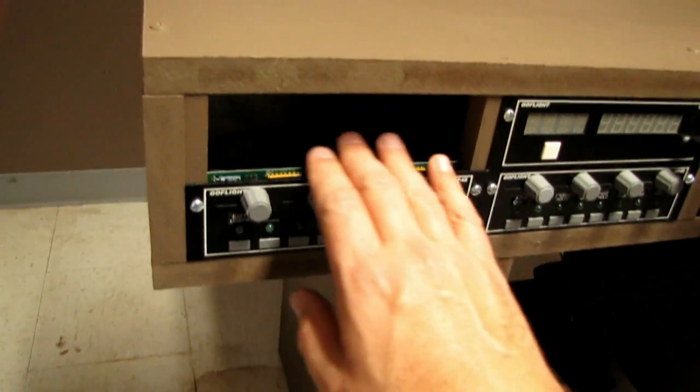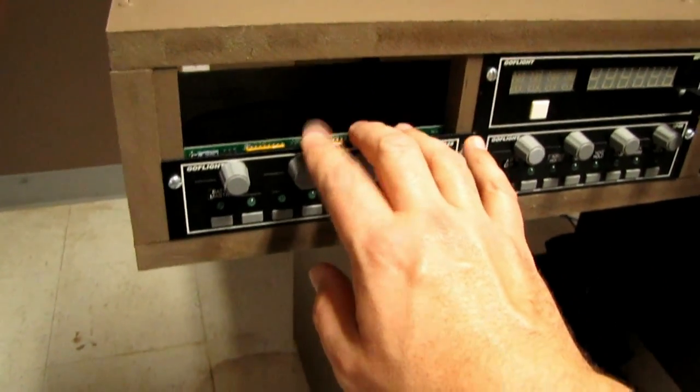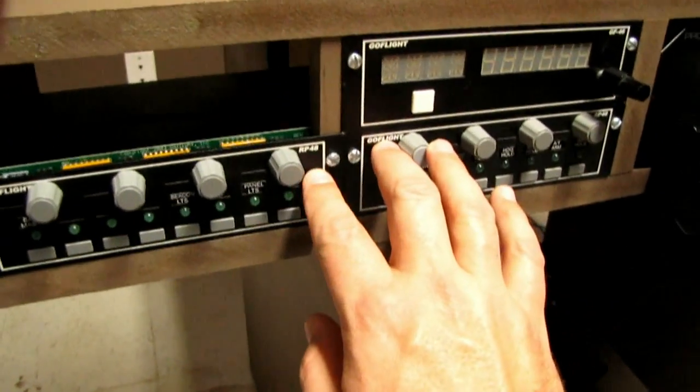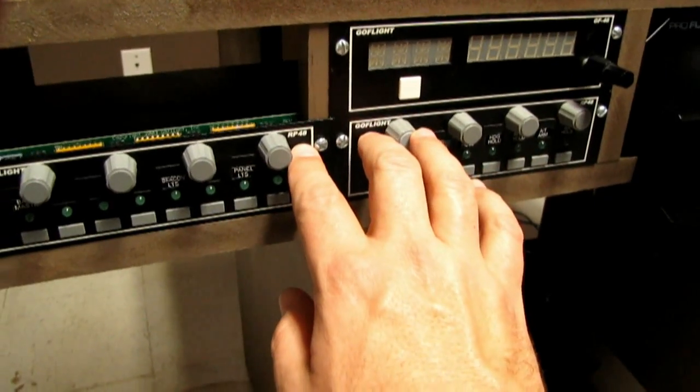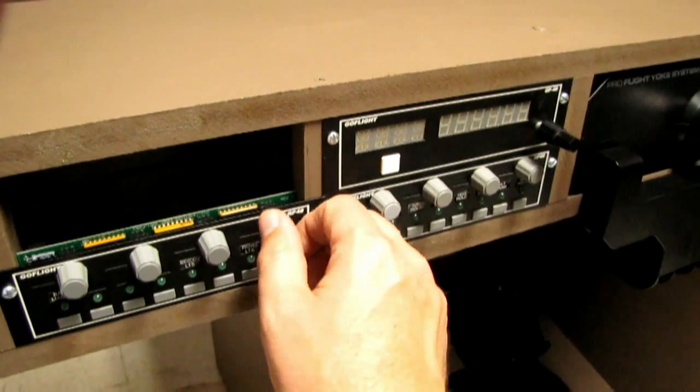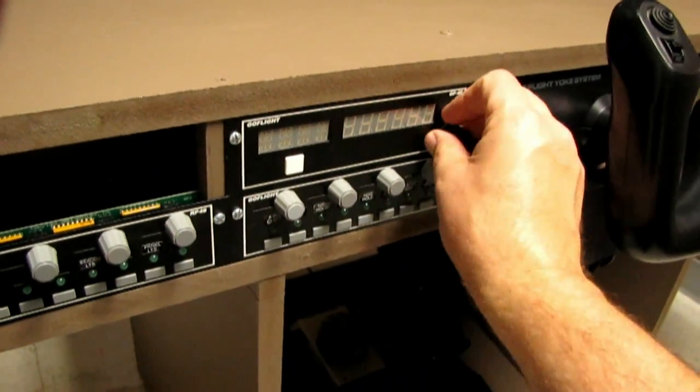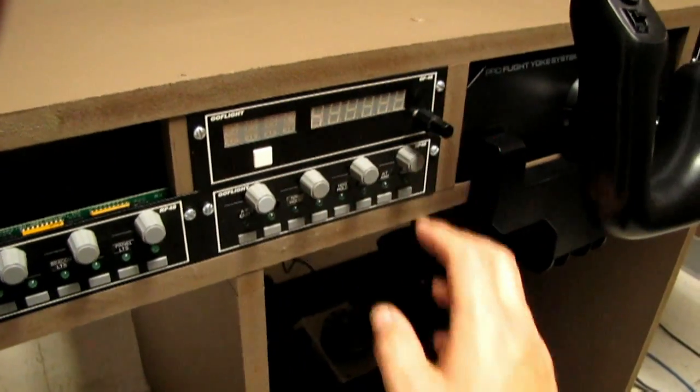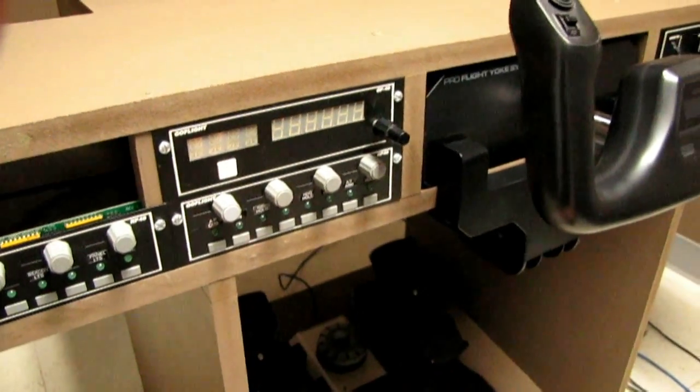So you can see we've got your GoFlight units mounted here in their bays. Now a couple of RP48 units, got the push buttons and the rotary switches, got a radio unit here: com, nav, transponder, ADF.